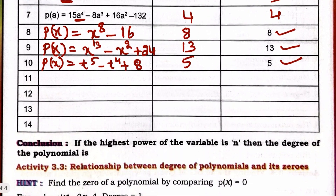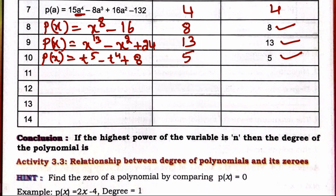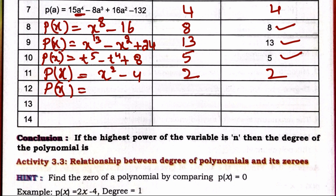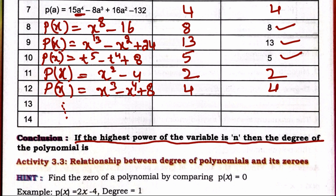We can write any degree and any polynomial. For example, p(x) = x² − 4 has degree 2, and p(x) = x⁴ − x³ + 8 has degree 4, since the highest power is 4. The conclusion: if the highest power of the variable is n, then the degree of the polynomial is n.